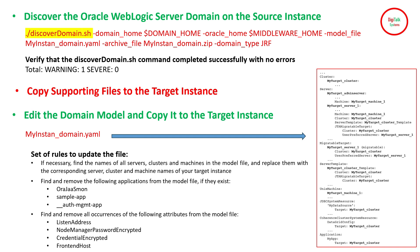You also need to find and remove all occurrences of the following attributes: listen address, node manager password, encrypted credentials, and frontend host, since these are specific to the source environment. Additionally, if server names, cluster names, or machine names differ between source and target, you must replace them in the YAML file with the corresponding names of your target instances.